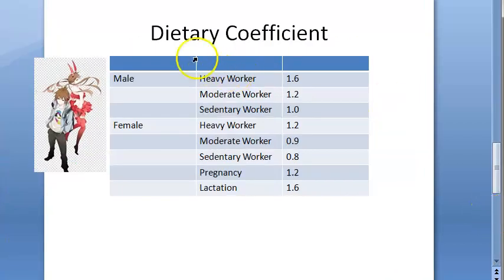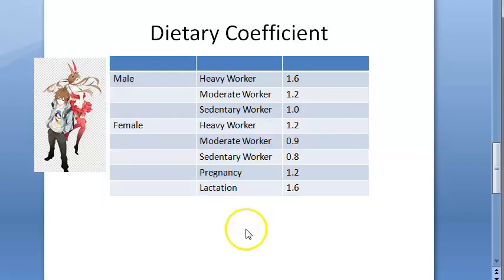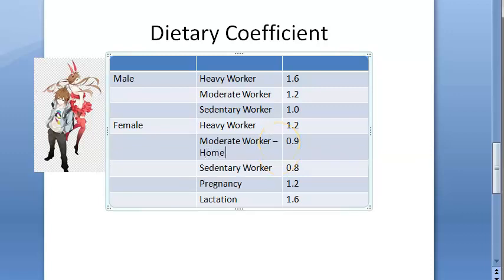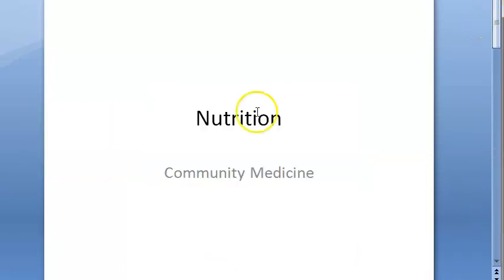In exam questions, they will give you a person's job (like clerk or bank worker — sedentary work) and ask you to calculate the dietary coefficient, identify what is lacking, and how much needs to be added. For females there are many classifications: heavy, moderate, and sedentary worker, plus pregnancy and lactation. A homemaker is a moderate worker. Adolescents have a coefficient of 1.0; for children, remember 4 to 5 years is 0.5.